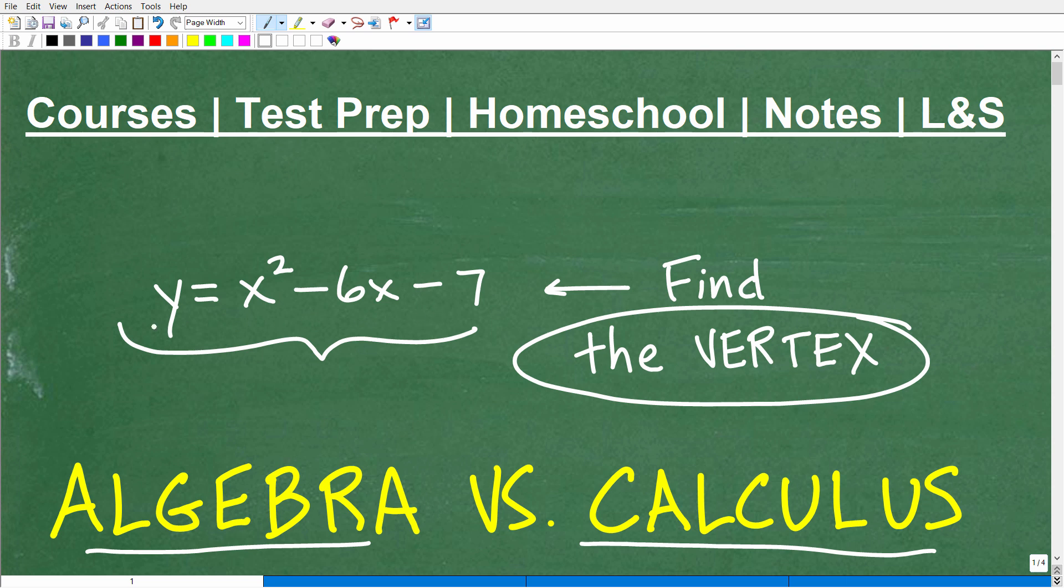Which is easier to find the vertex of this shape right here, and this happens to be a parabola. Of course we're dealing with a quadratic equation or a quadratic function, but when we graph this thing, it will be a parabola, some sort of U-shaped thing like this.